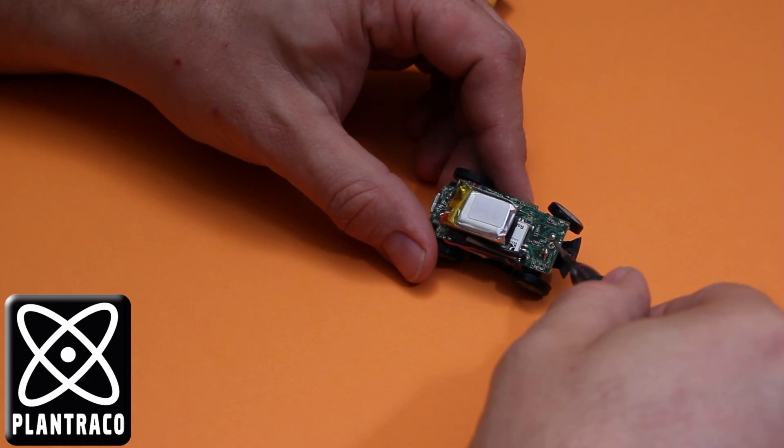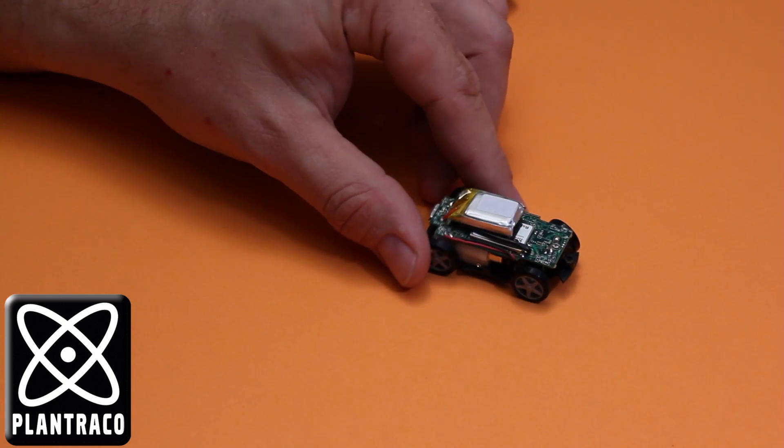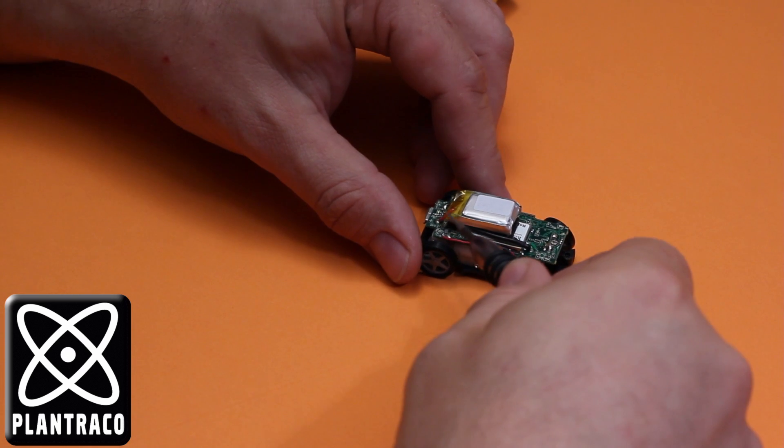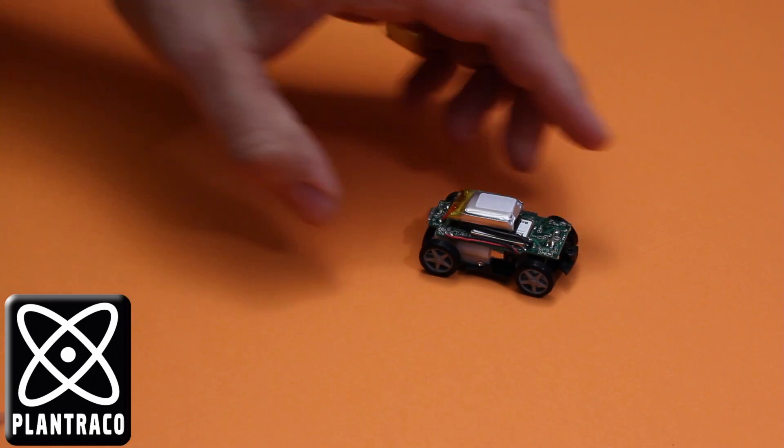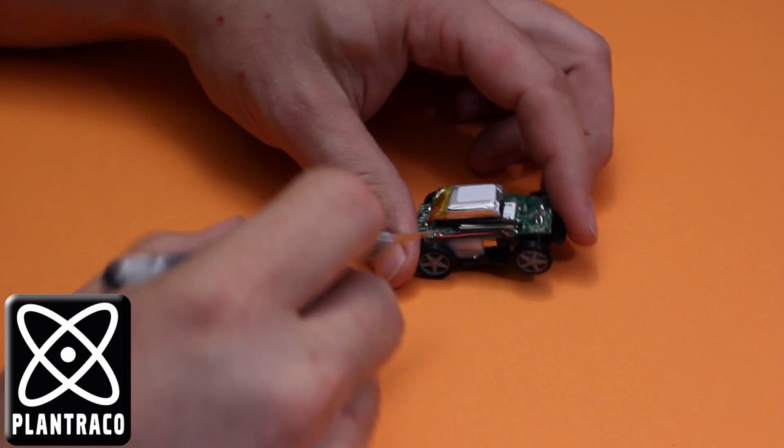The next step, there's two screws that need to come out. One here at the front and one underneath the battery. To get the one out from under the battery you need to remove the foam tape that holds the battery down.